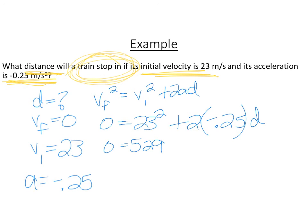Of course, this is all still set equal to 0. 2 times negative 0.25 will give us negative 0.5, and of course, that's still multiplied by the d. Now let's try to get d all by itself. So I'm going to subtract 529 on both sides. So I end up with negative 529 equals negative 0.5 d.